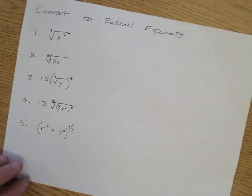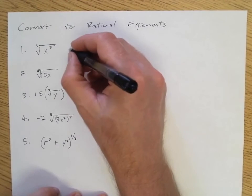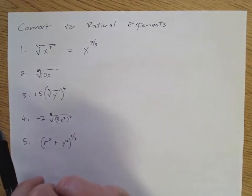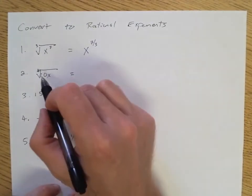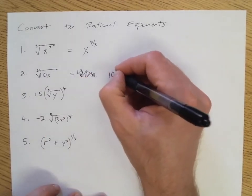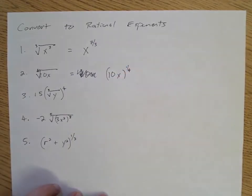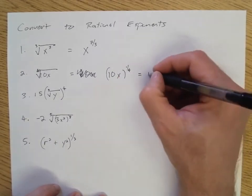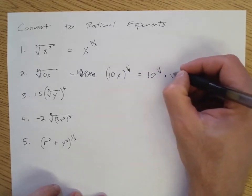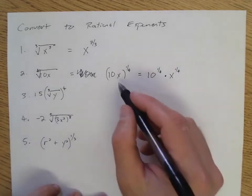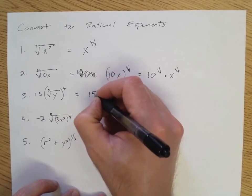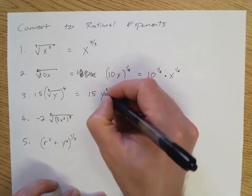Now we're taking something in radical form and rewriting it as an exponent. For number one, we rewrite that as x to the power of seven-thirds — the root or index is the denominator of my rational exponent. For number two, the whole 10x is underneath the radical, so it's 10x to the power of one-fourth; because there's no addition or subtraction, we can also write it as 10 to the one-fourth times x to the one-fourth. Number three: the 15 is separate, so we have 15 times y to the power of four-thirds.